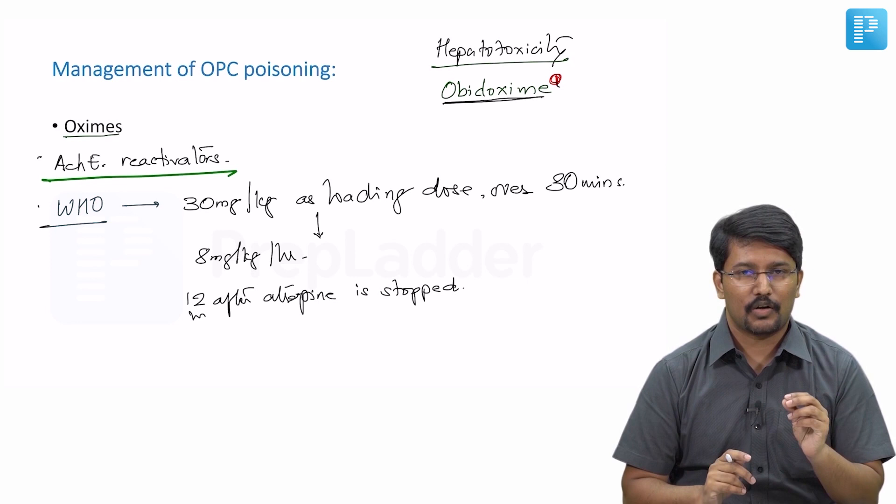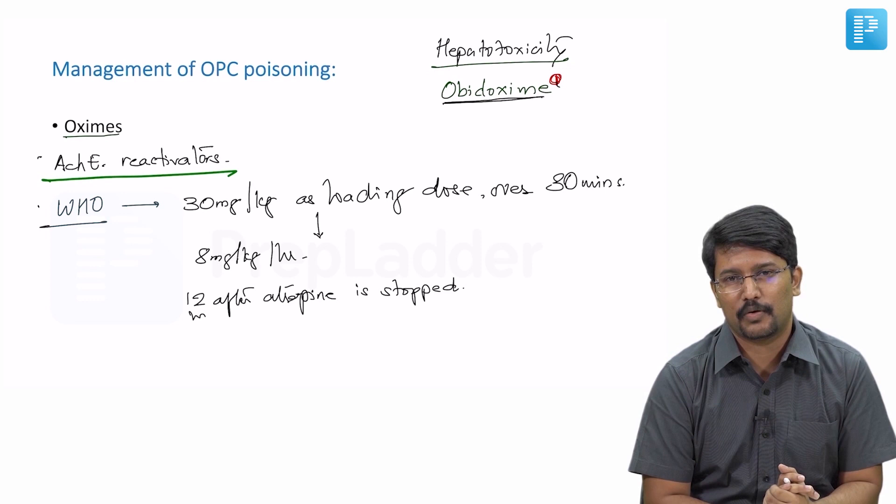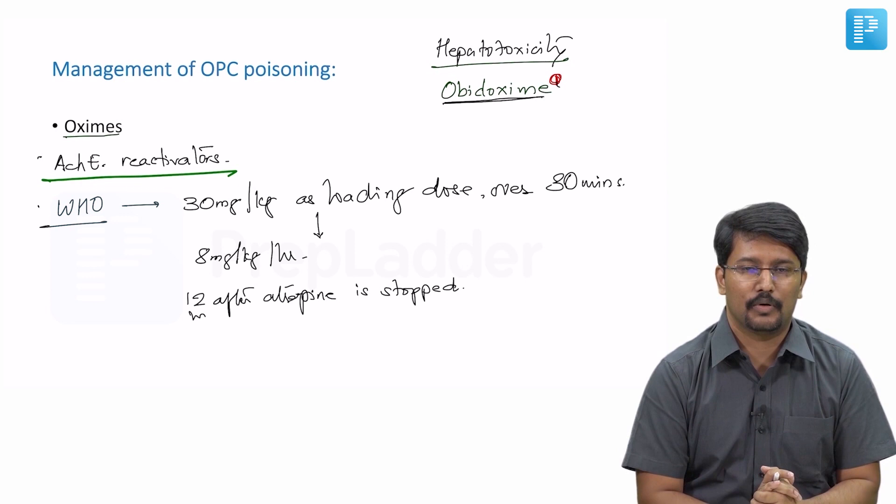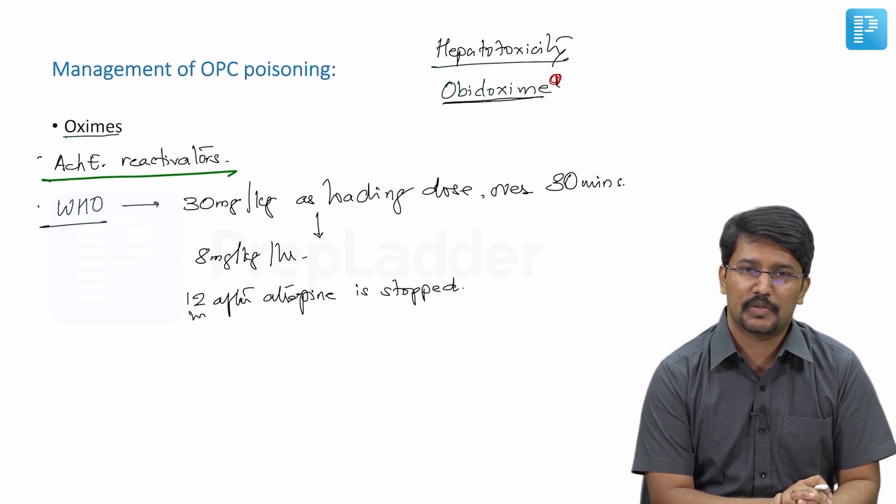There are several studies which have shown that oximes are not helpful even for patients who have organophosphate compound poisoning. There are carbamates where oximes are not effective and there are studies showing harm in treating carbamate poisoning. But even in organophosphate compound poisoning, oximes are not found to be helpful. In fact, there are several studies and even large-scale meta-analyses which show that use of oximes is associated with harm. And hence, there are a lot of authorities including Indian authorities mainly from CMC Vellore recommend that we should not be using oximes anymore.